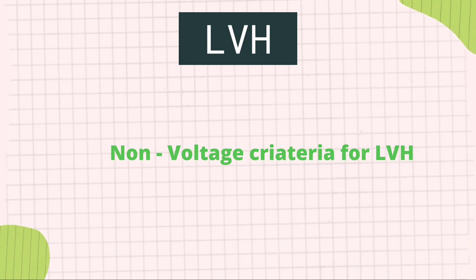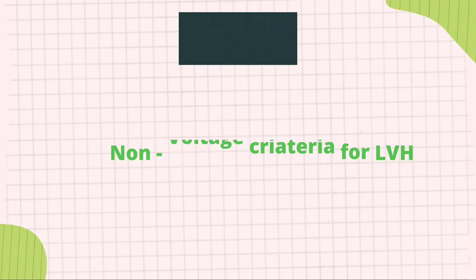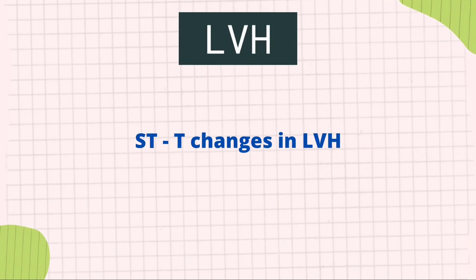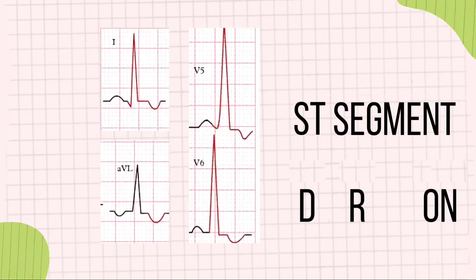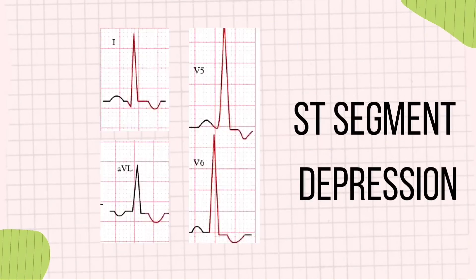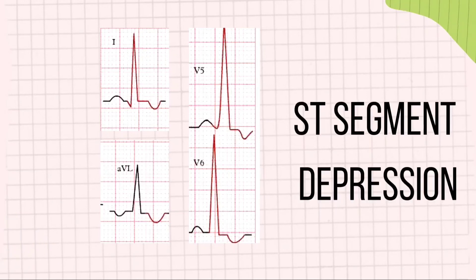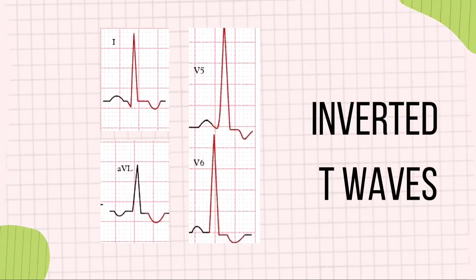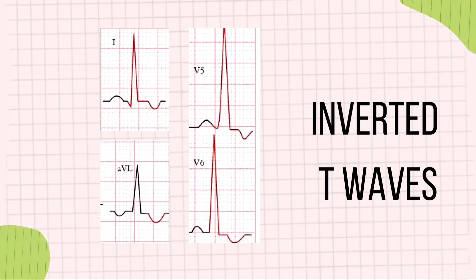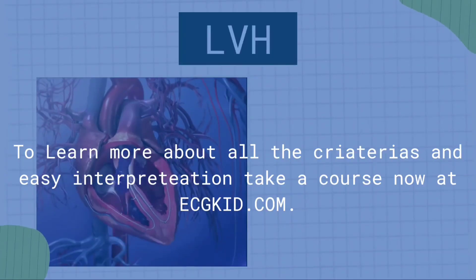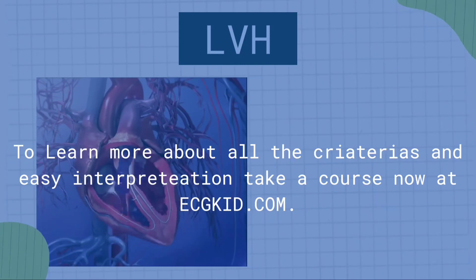Like the voltage criteria, there are also non-voltage criteria and STT changes that are important. Non-voltage criteria include marked ST-segment depression in lateral leads — that is, leads I, AVL, V5, and V6 — along with T wave inversion. There are several other criteria to diagnose left ventricular hypertrophy. To learn more, join the course on ecgkid.com.